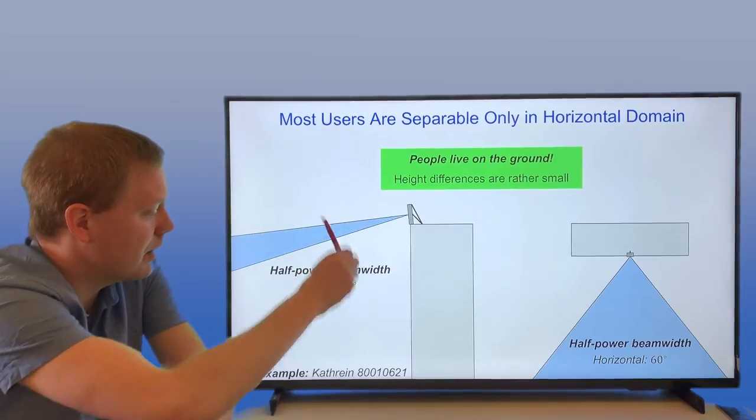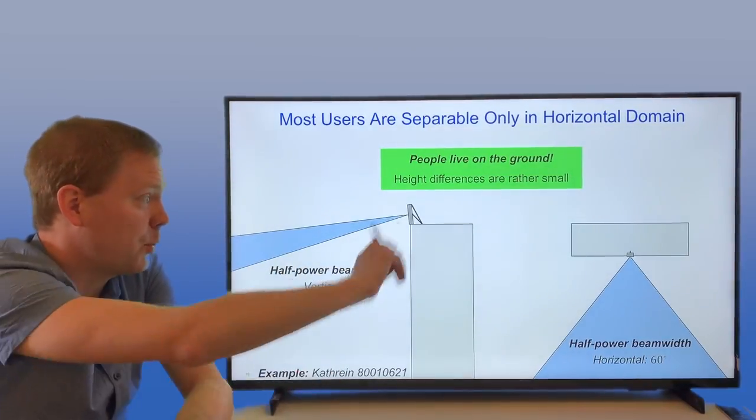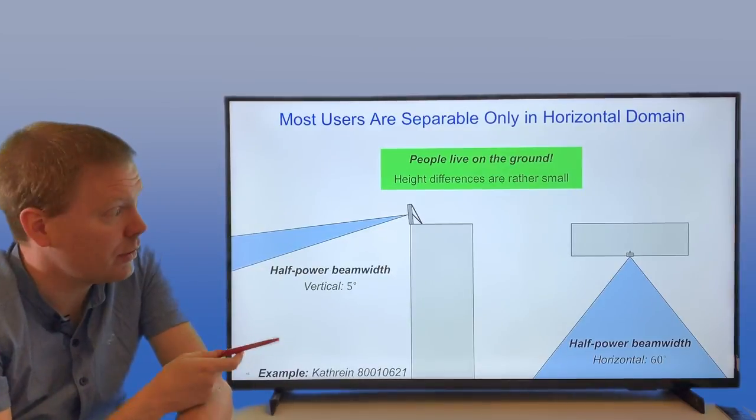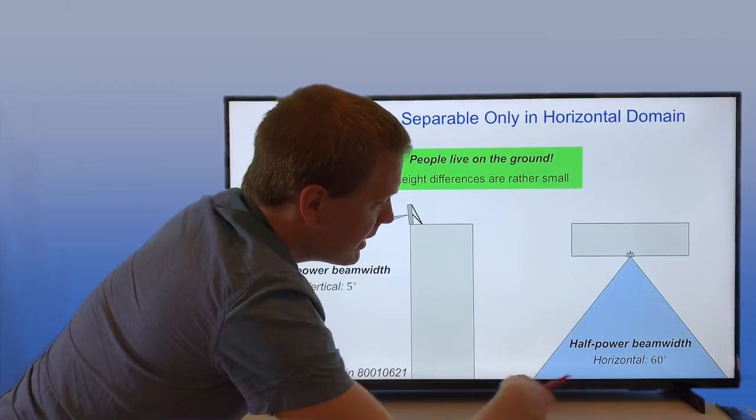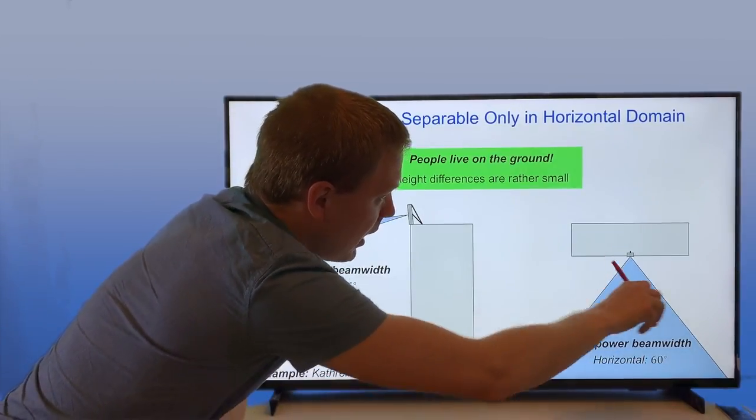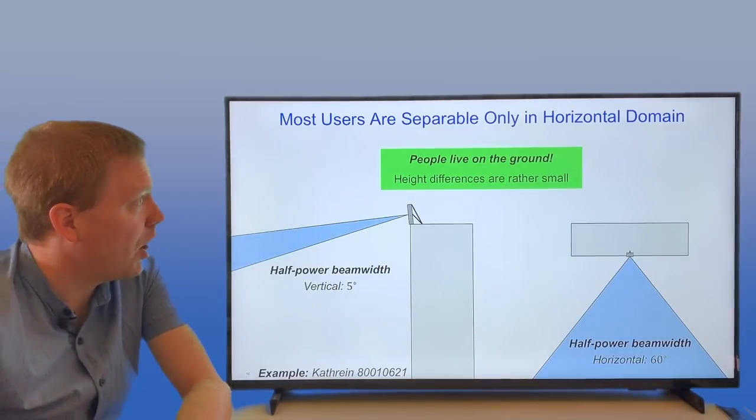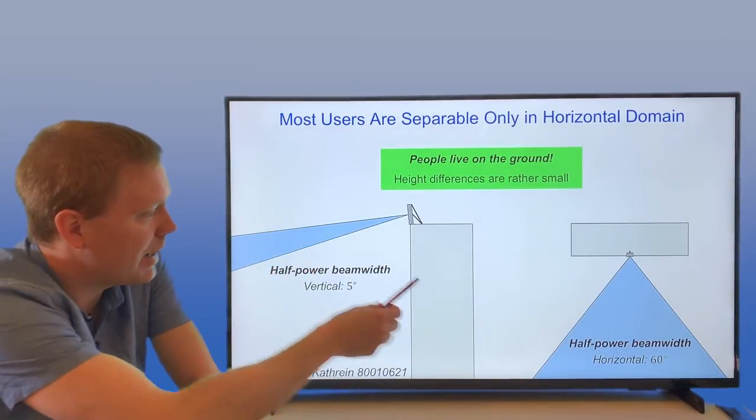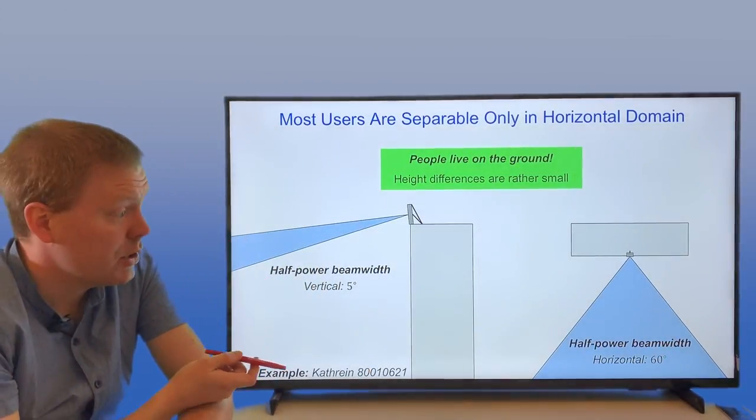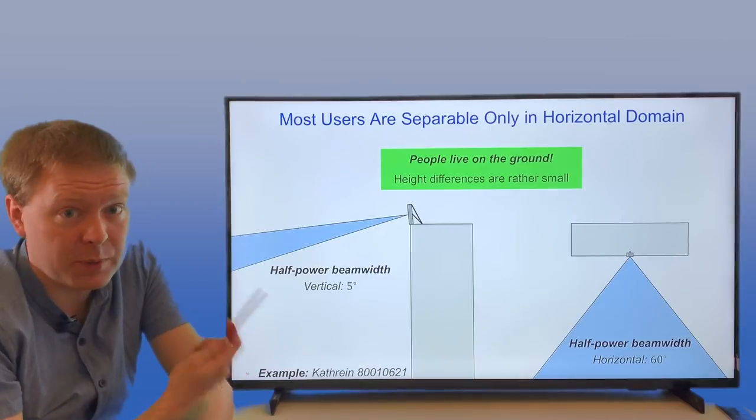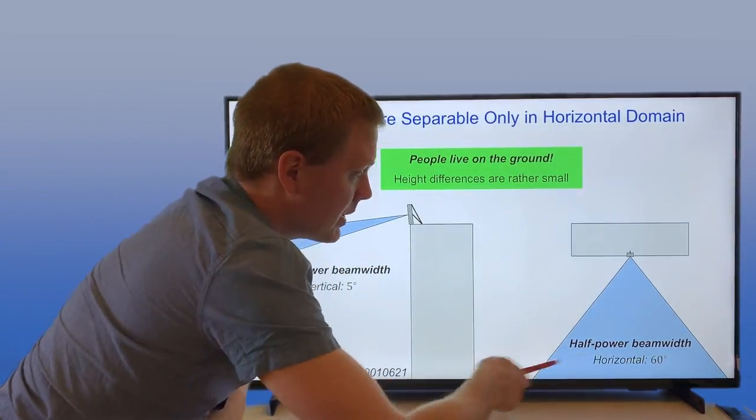It's focusing the power downwards here. If you're below here, you're not in the main beam, but you also have a short distance, so it's not a big problem. You still have a strong signal. But then you have a half power beam width horizontally that is 60 degrees here, so you can serve people in a 120 degree sector. People are mostly located in different directions here instead of different floors on the skyscraper. For that reason, what we aim at in Massive MIMO is to be able to have much narrower beams in the horizontal domain.